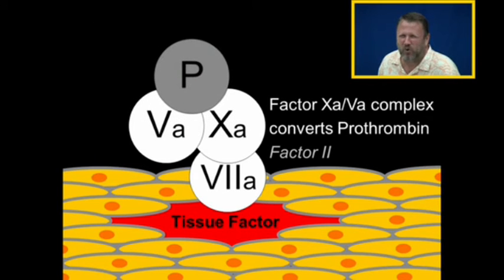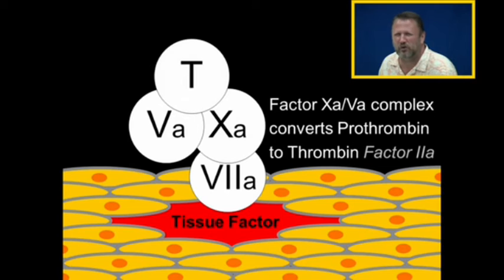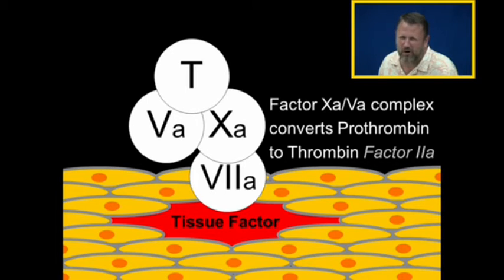That prothrombinase complex will convert prothrombin, formerly known as factor two, into thrombin. Thrombin is factor two activated.